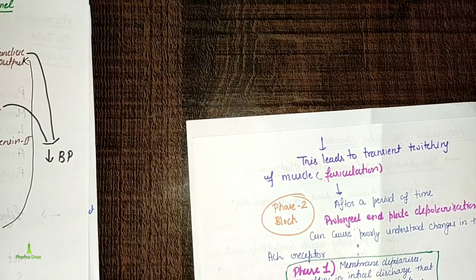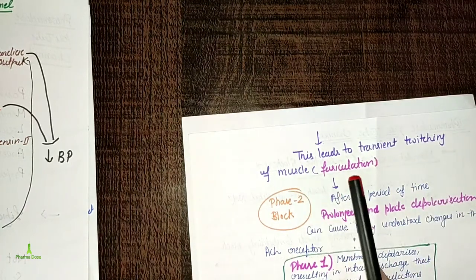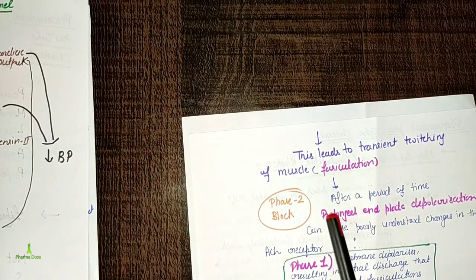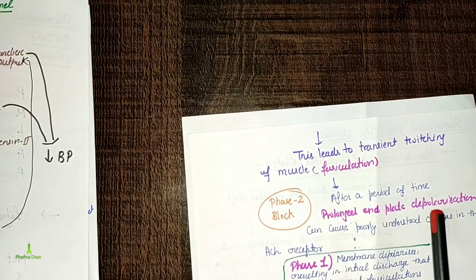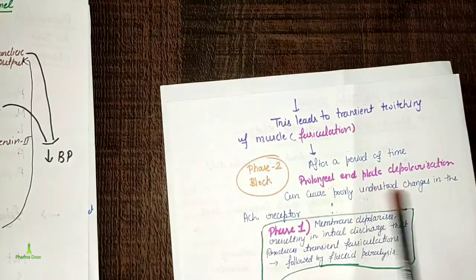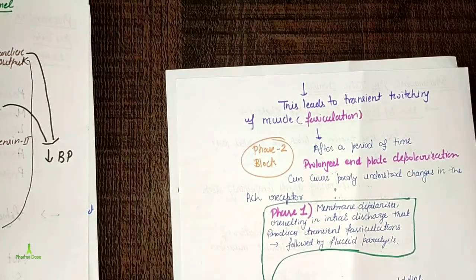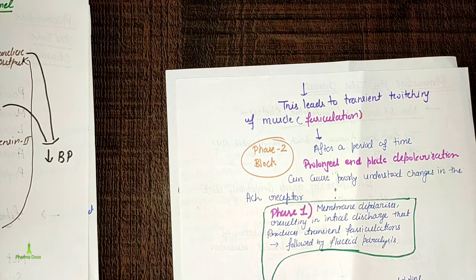This leads to transient twitching of muscles. When the sodium channel opens, depolarization occurs, resulting in fasciculations. After Phase 2 block, after a period of time, prolonged end plate depolarization can cause poorly understood changes in the acetylcholine receptor, leading to desensitization.